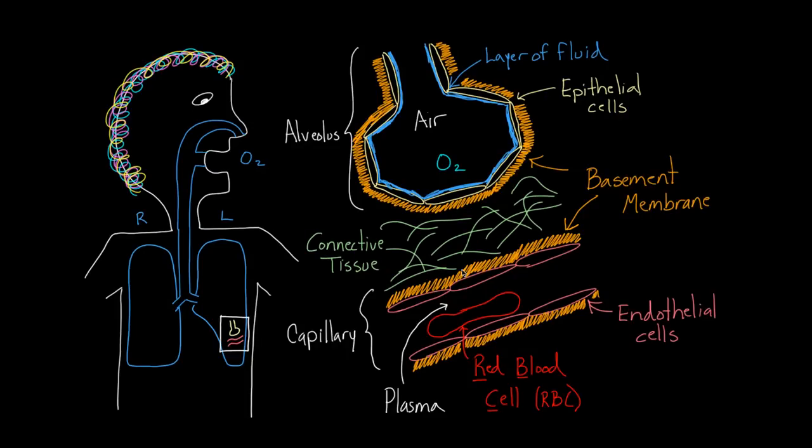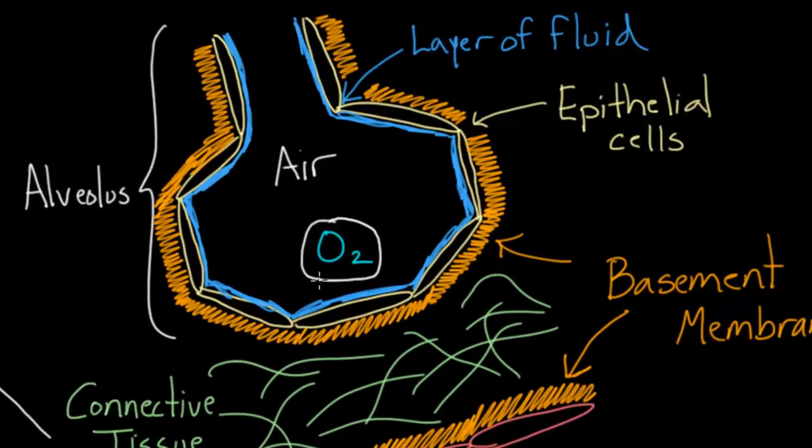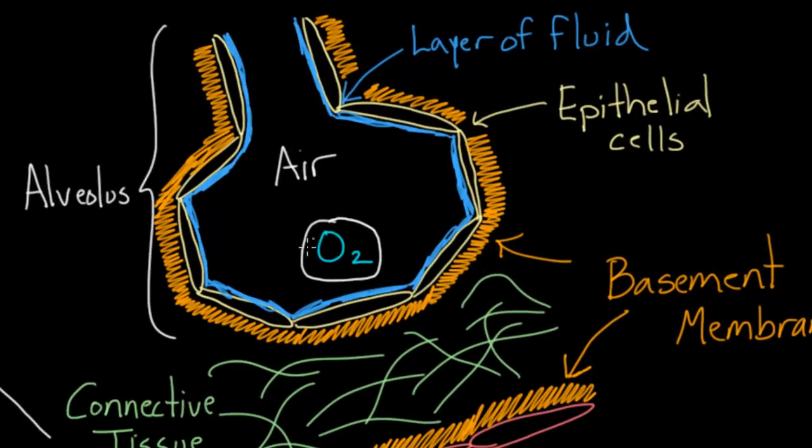So there you have all the layers between the alveolus and the capillary. Now we have this molecule of oxygen. It's going to make its way from this alveolus out of the gas, and first it's going to have to go into the liquid phase. That's kind of a big deal. It's going to enter this thin layer of fluid which coats the inside of the alveolus.